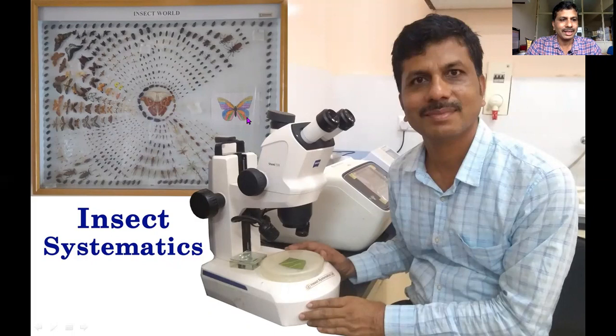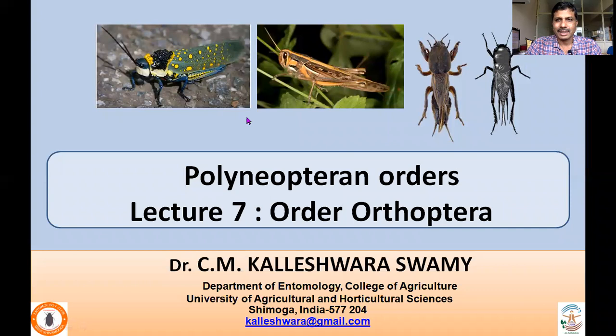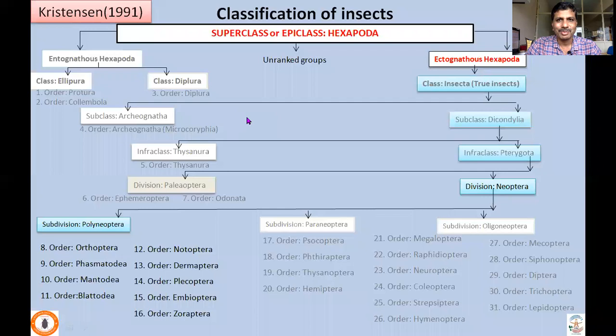Welcome back. Welcome to the Insect Systematics lecture series. Since the previous classes, we have been discussing the general characters of orders and economically important families. For a few more lectures, I'll be talking about Polyneoptera orders. In lecture number seven, I'll be talking about the characters of Order Orthoptera and its economically important families. This is the slide I'm continually presenting to ensure that the classification given by Christensen and the updated portion is clearly understood.